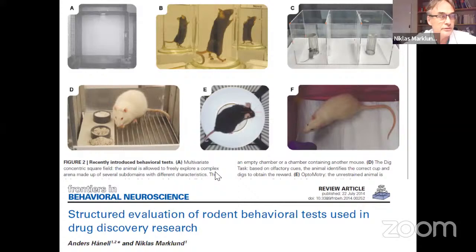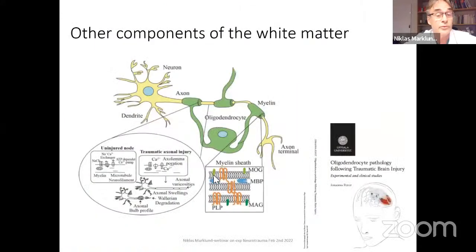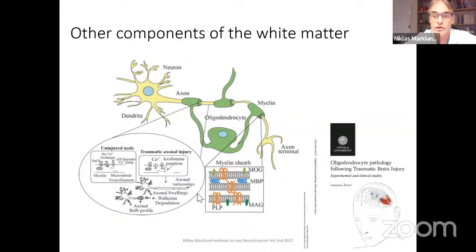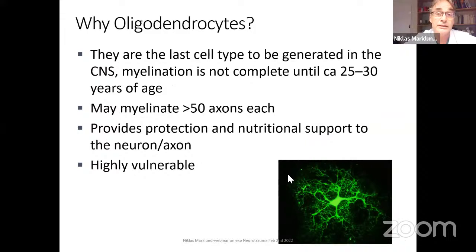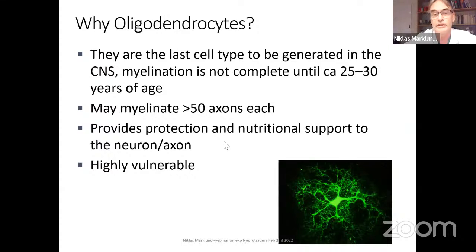We used these fluid percussion models to look for white matter injuries. There are other components beyond the axon — the myelin produced by oligodendrocytes, which was strangely somewhat forgotten in experimental TBI research. We started looking into it and had what I can say was a pretty good PhD thesis on studying oligodendrocytes. They are interesting because they keep myelinating and developing the CNS until we're around 30 years old, and each oligodendrocyte may myelinate more than 50 axons.